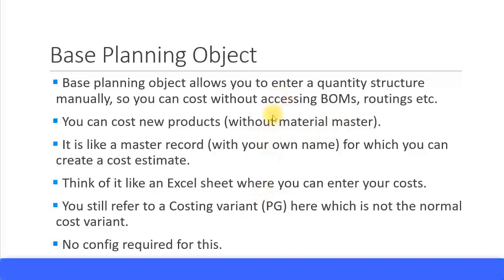You can just put a structure to cost your new products — it's useful for prototyping and estimating what quantities and amounts you need. Think of it like an Excel sheet where you enter all your information: the material, the quantity, and the cost. Rather than keeping it in Excel, you enter it directly into the system — that is the base planning object.